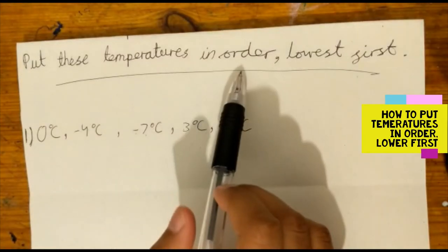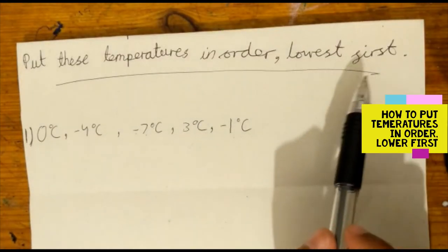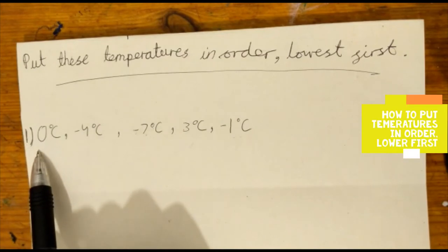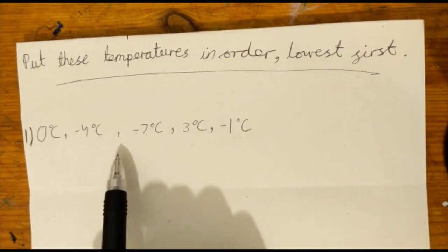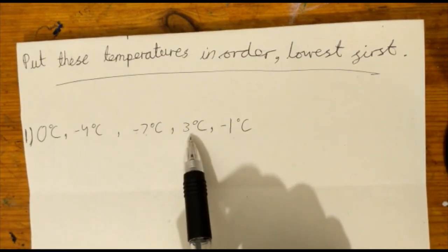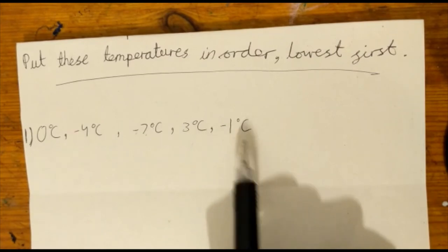Put these temperatures in order, lowest first. We have the temperatures 0 degrees, minus 4 degrees, minus 7 degrees, 3 degrees, and minus 1 degrees.